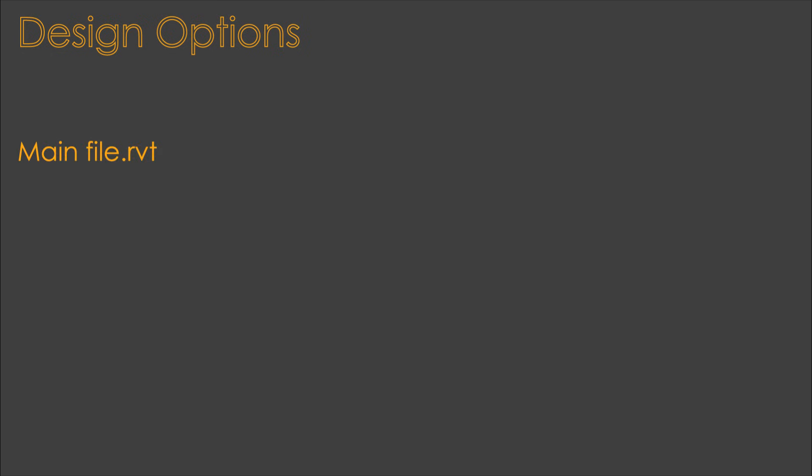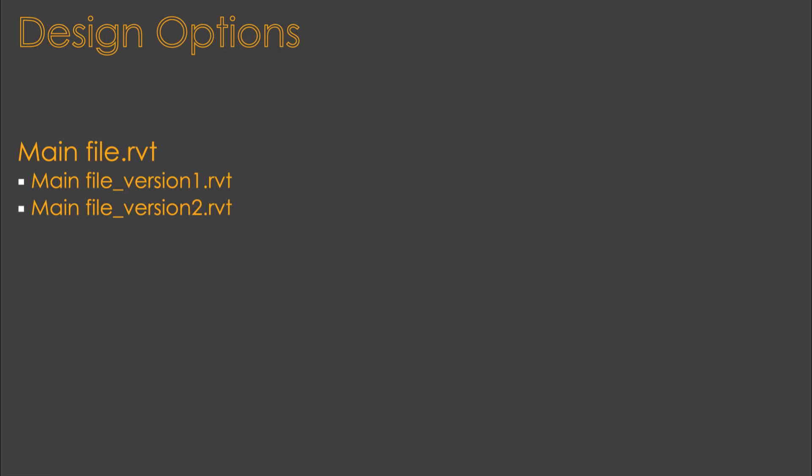Revit has this cool tool that allows you to go through different design options, test them out, and see how they work — without having to save separate files. In other software you'd have to create different versions of the file for each design option, but in Revit you can do everything inside one file.